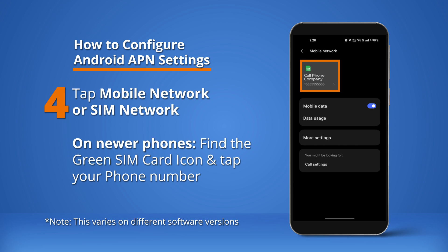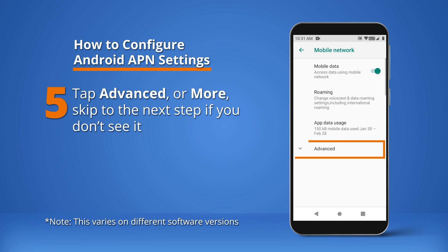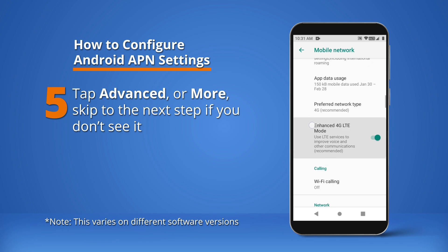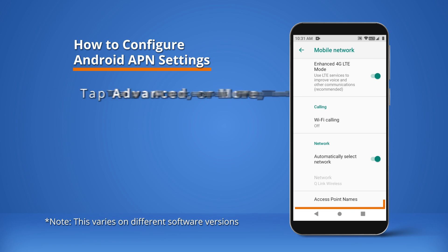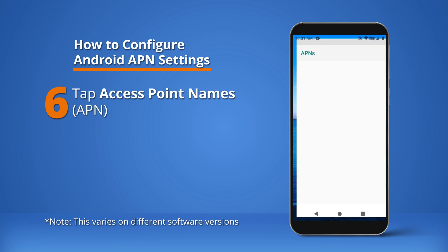Find the green SIM card icon and tap your phone number. Tap Advanced or More — skip to the next step if you don't see it. Then tap Access Point Names.